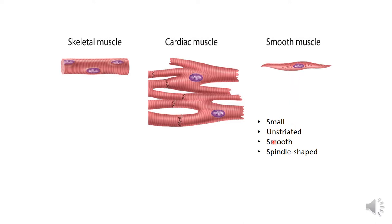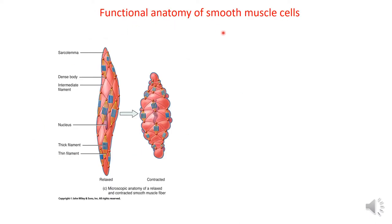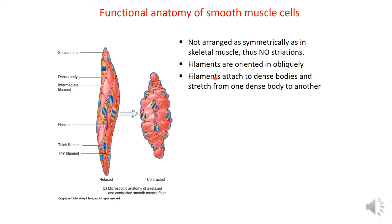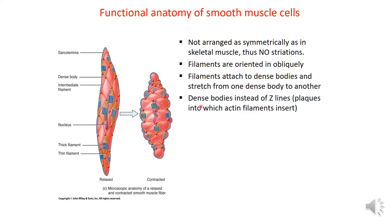Smooth muscles are small, unstriated, and smooth, with a spindle shape. Regarding their functional anatomy, smooth muscles are not arranged as symmetrically as skeletal muscle — they have no striations. The filaments are oriented obliquely and are attached to dense bodies instead of Z lines, stretching from one dense body to another.